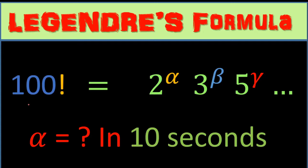Hello everyone, welcome to my channel. Today we'll be discussing how to do a prime factorization of a factorial and how to calculate the value of alpha, beta, gamma within 10 seconds. We have to calculate the maximum power of 2 divisible by 100 factorial, similarly the maximum power of 3, and for 5. We'll be using Legendre's formula, and I'll also give you insight into how we got the formula.